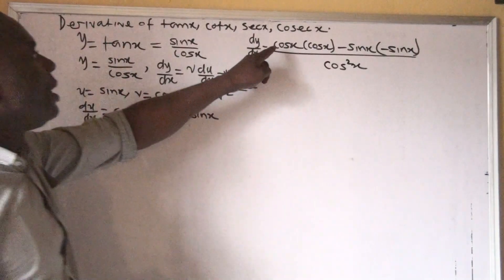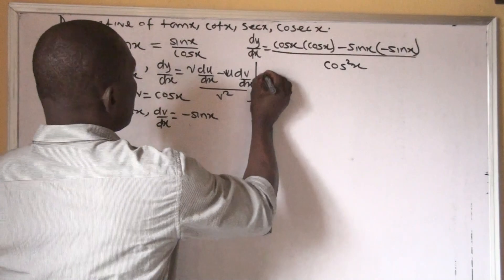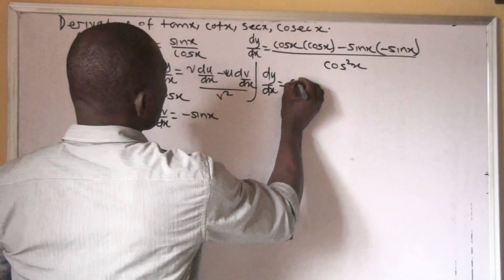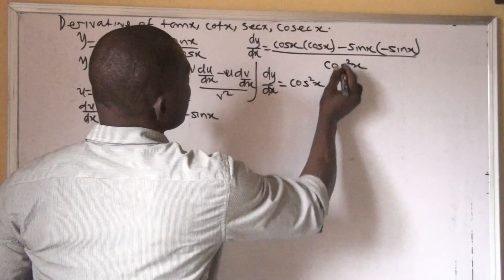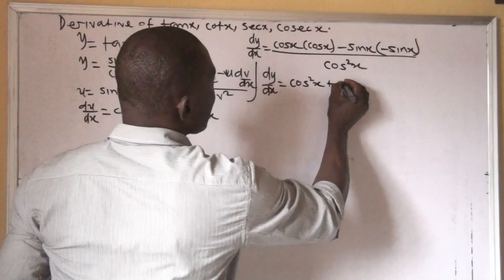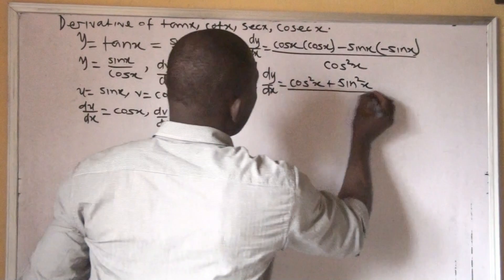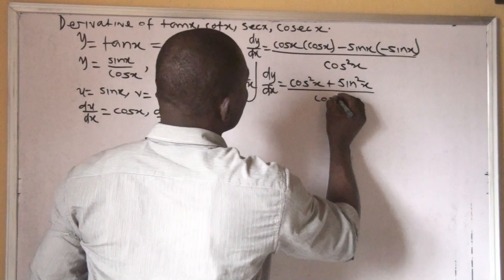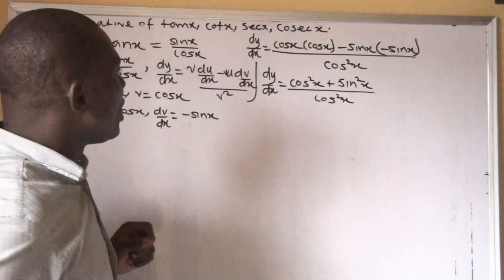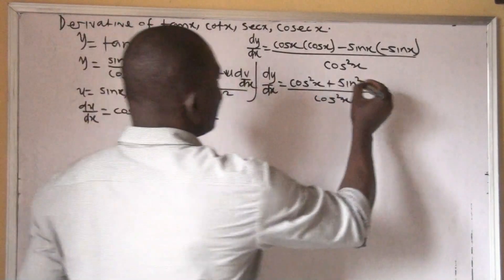Everything is over v squared. Our v is cos x, so that means it's cos squared x. If we simplify, cos x times cos x gives us cos squared x. Minus times minus becomes plus, and sin x times sin x gives us sine squared x, all over cos squared x.